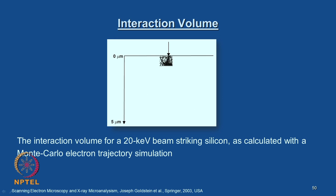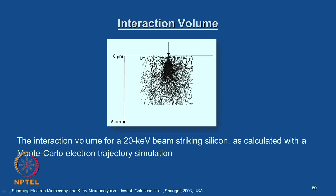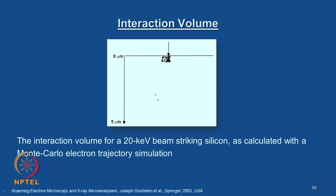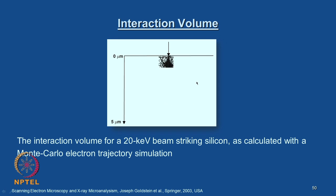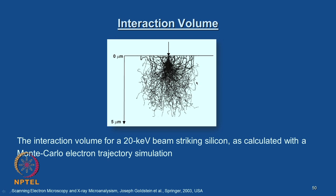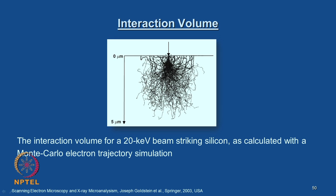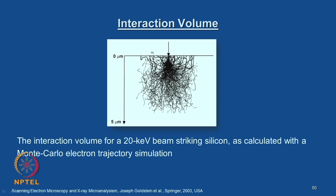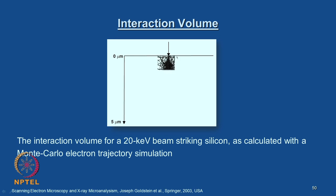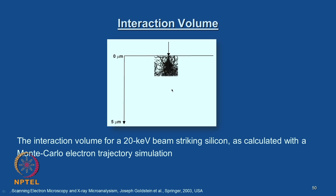It is very interesting to look at the electron trajectories — you can see them with dark lines and very light lines going through quite a bit of volume. You may be wondering that even though the electron probe size is on the order of a few micrometers, the interaction volume is quite large in three dimensions — a few orders of magnitude more than the probe size dimension.